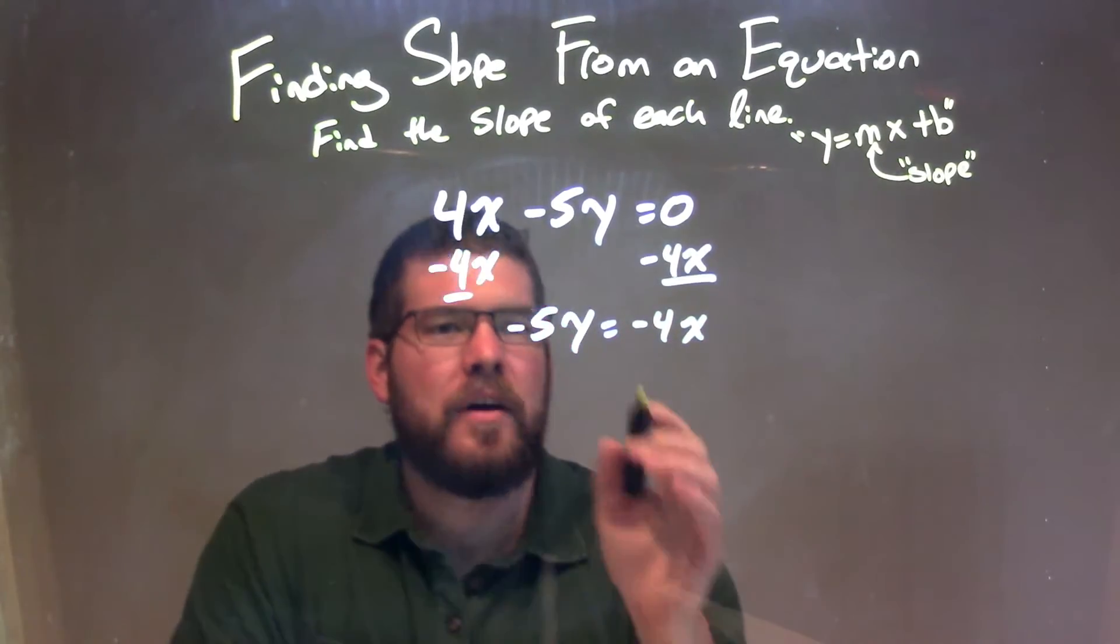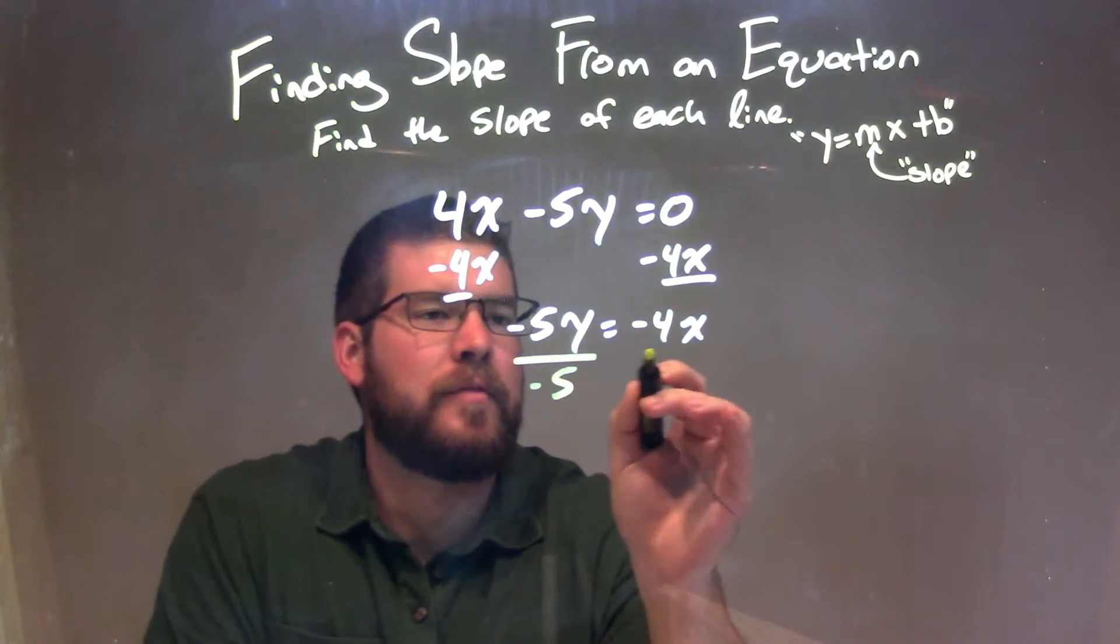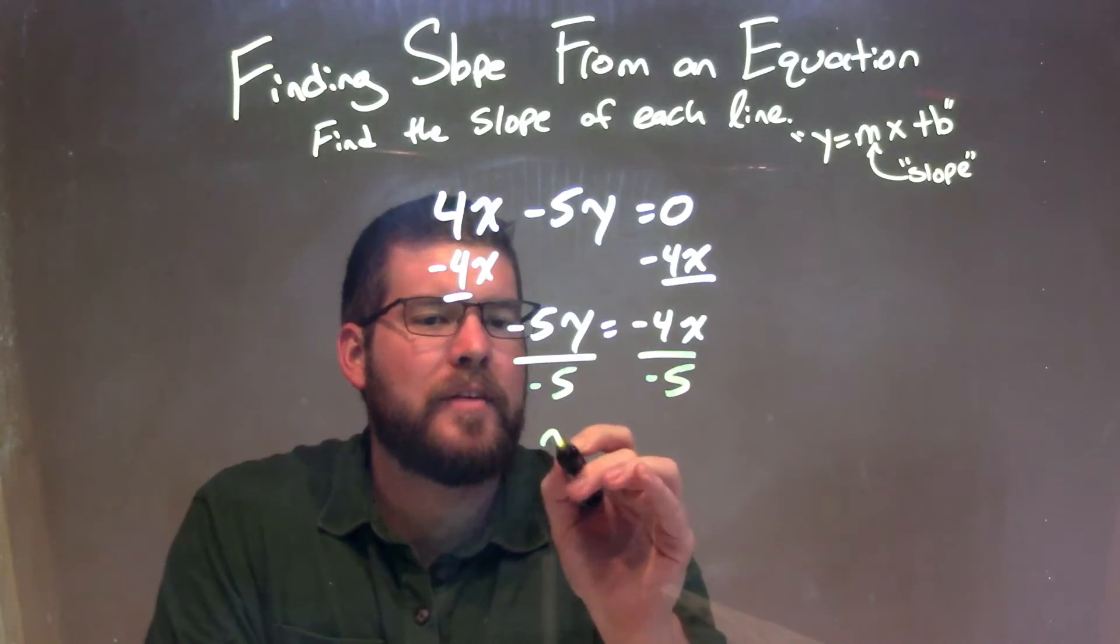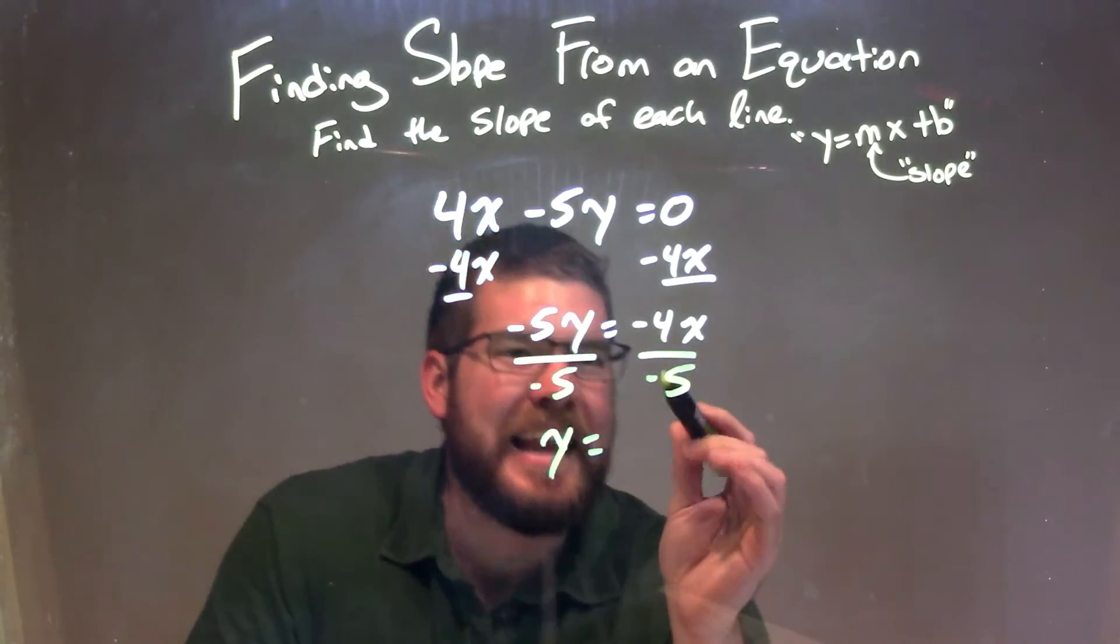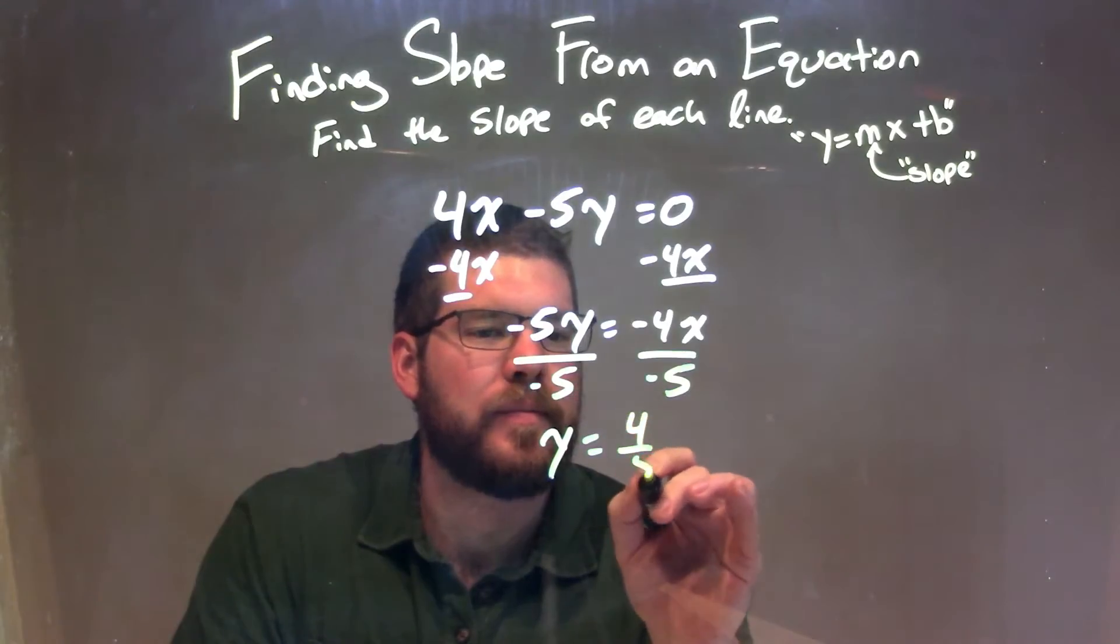So to get y by itself, or fully by itself, I divide both sides by negative 5. y is now isolated by itself, and negative 4x divided by negative 5 is a positive 4 fifths x.